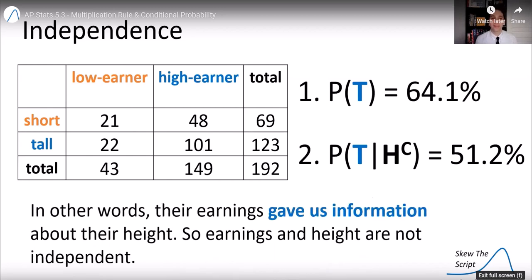So the events of selecting a low-earner and someone who is tall are not independent. In other words, their earnings gave us information about their height. When we knew they were a low-earner, the probability of selecting a tall person was different. That information affected our probability. So earnings and height are not independent.